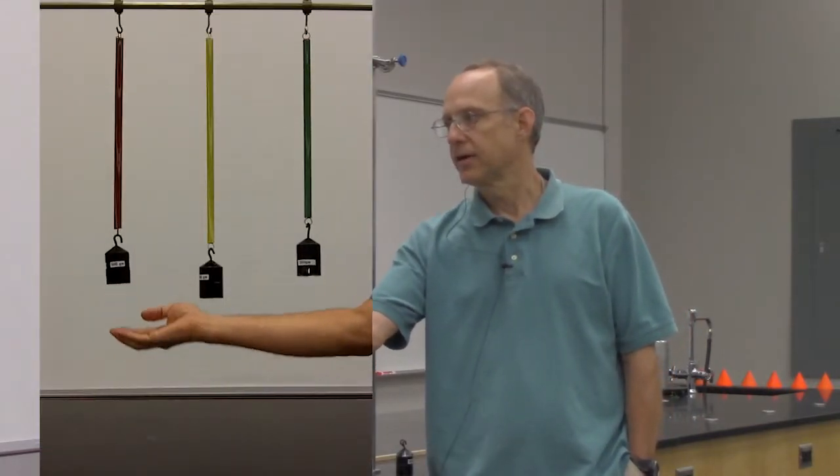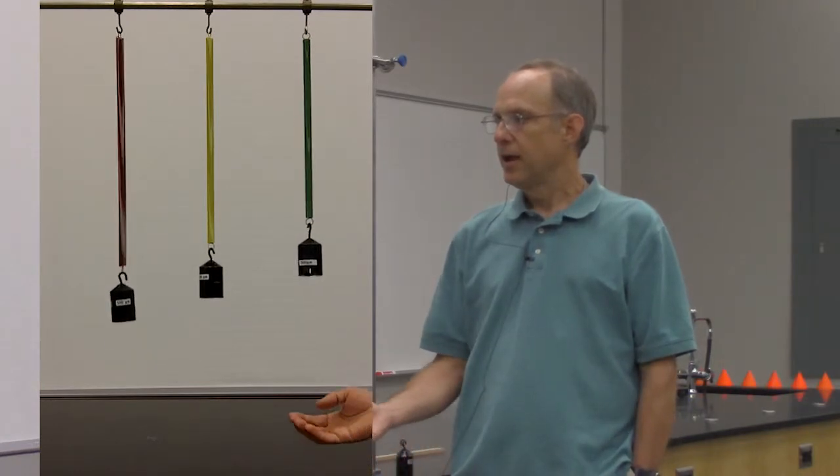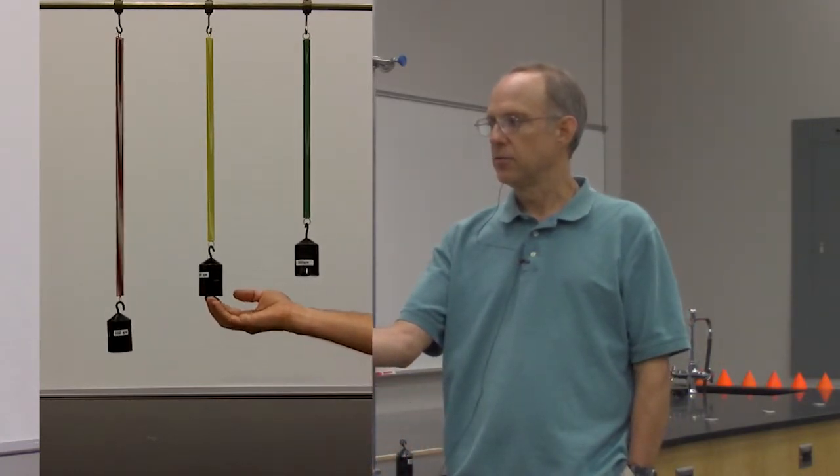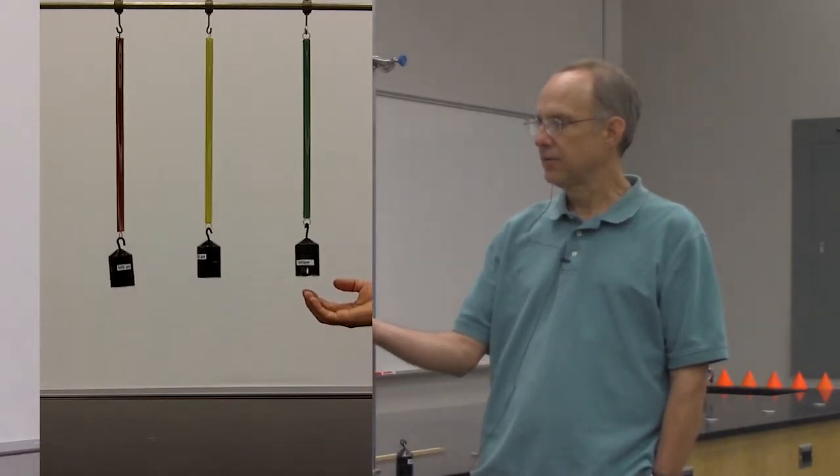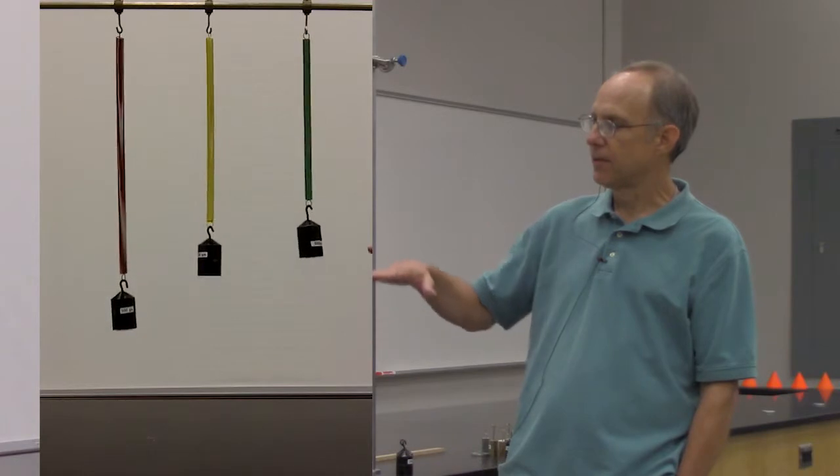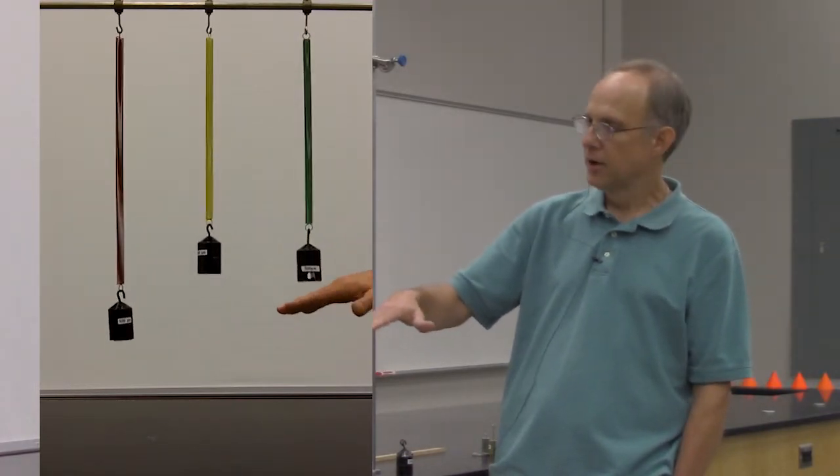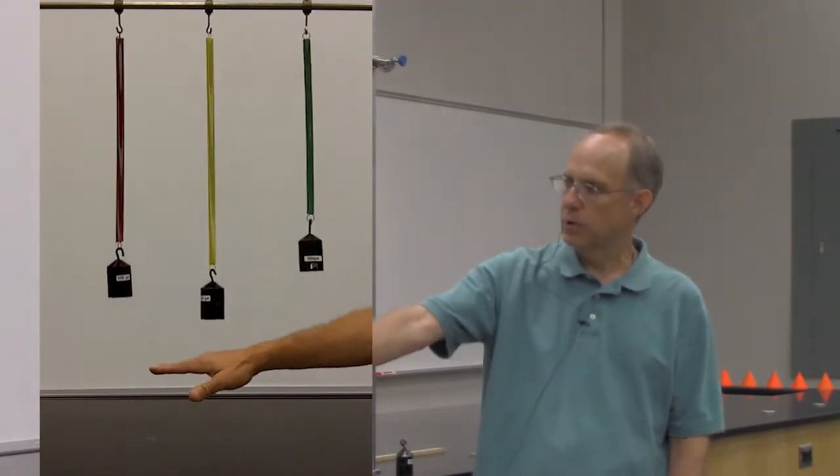If I set this into oscillation and compare that to this oscillation, and then compare that to this oscillation, we can see that this one oscillates at a much higher frequency than the other two. And we can see that the weakest spring is oscillating at the lowest frequency.